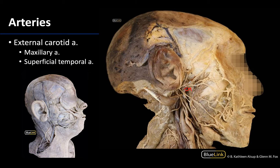The proximal portions of the superficial temporal artery are actually located within the parotid gland, and then you can see the distal portions of this artery extending superior to the parotid gland. Here's your parotid gland right here, and you can see the superficial temporal artery, the superficial temporal vein, and the auriculotemporal nerve kind of right in the middle. That is seven out of the eight external carotid artery branches. We will explore the facial artery and some of its branches in more detail in the next session. Please let me know if you have any questions and thank you for your time.